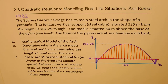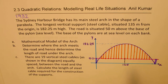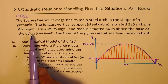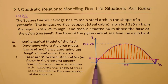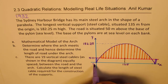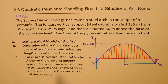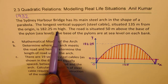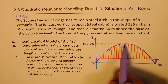Let's read the question and see what we need to do. The Sydney Harbour Bridge has its main steel arc in the shape of a parabola. The longest vertical support steel cable, situated 135 meters from the origin, is 182.25 meters high.